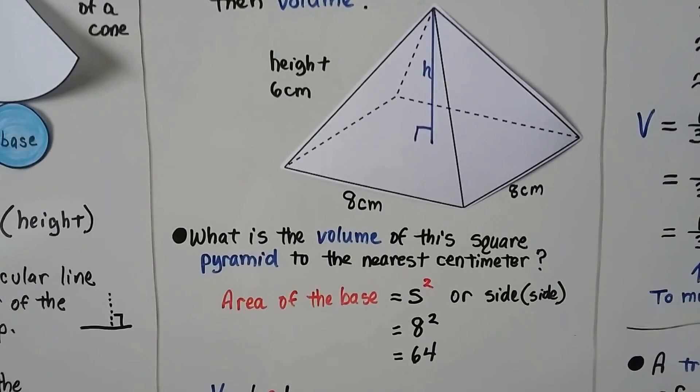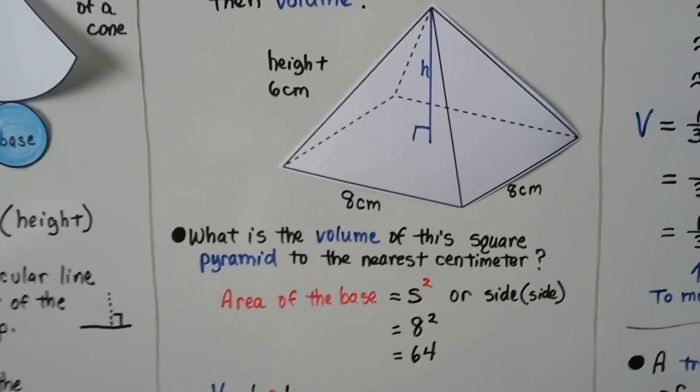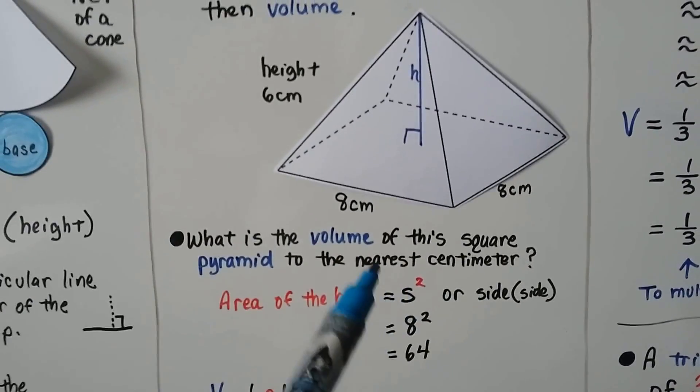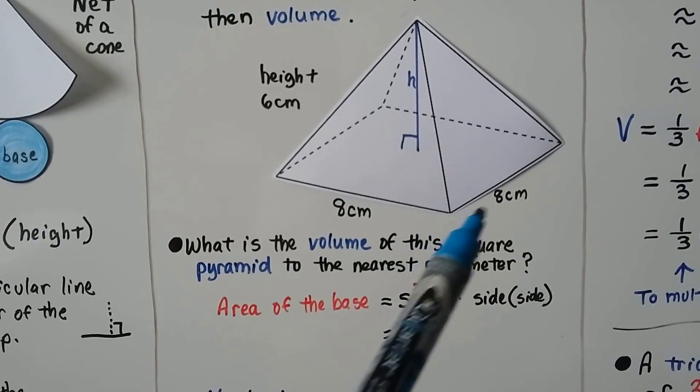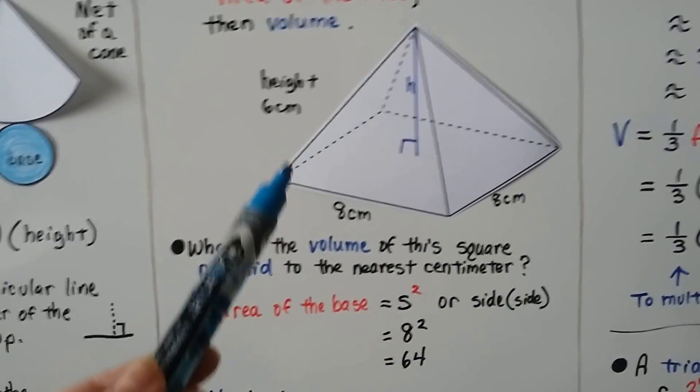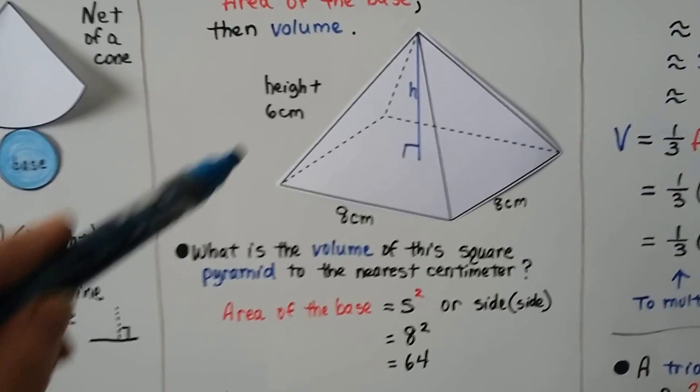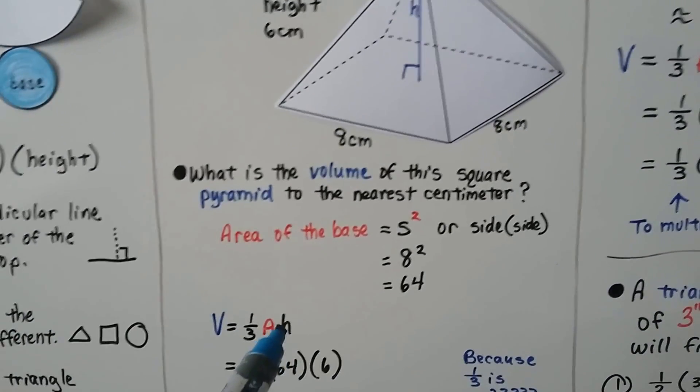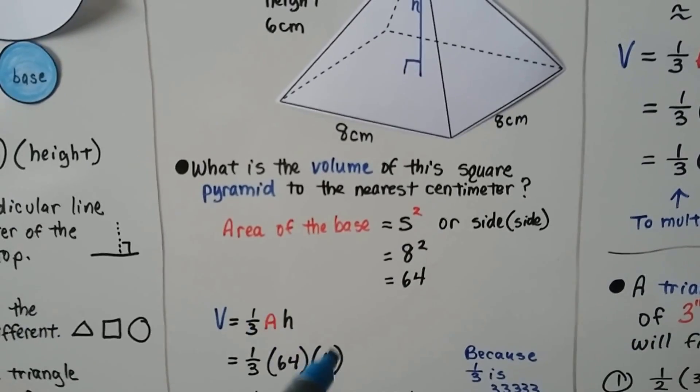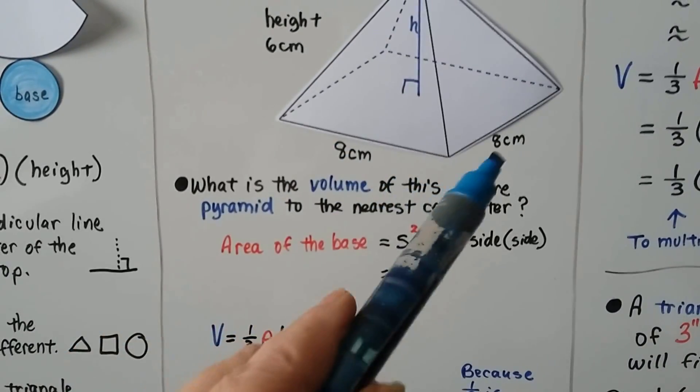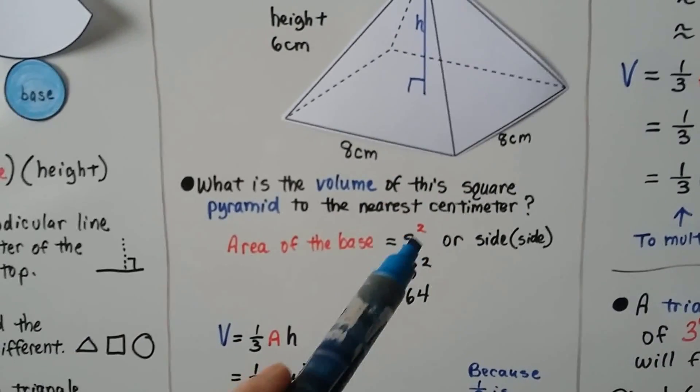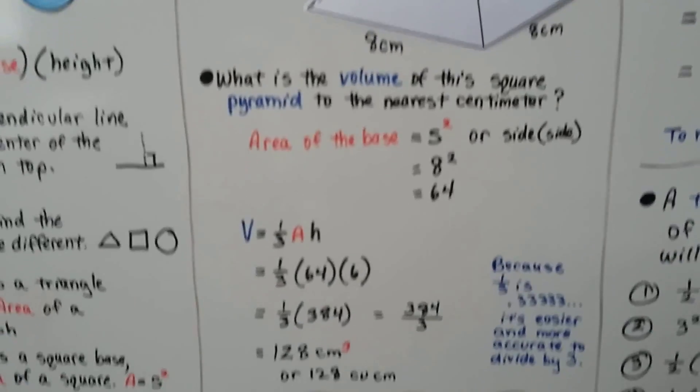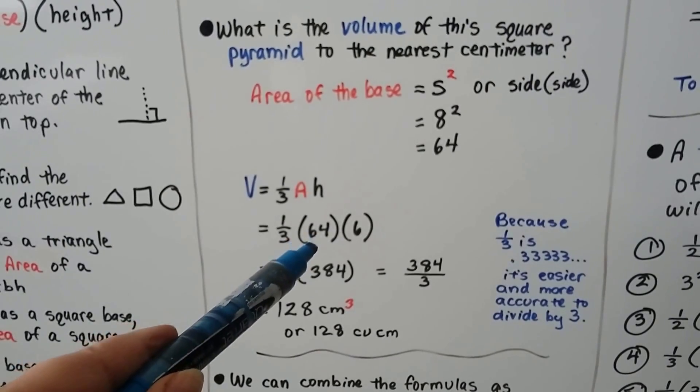What is the volume of this square pyramid to the nearest centimeter? So that right there tells you we're going to have to round it. Well, the base is eight centimeters here, eight centimeters here. It's eight all the way around. It's the definition of a square. The height is six. So in our formula, we're going to multiply it by six for the height. Since this is an eight, we're going to do side times side, which is eight squared, which is 64.